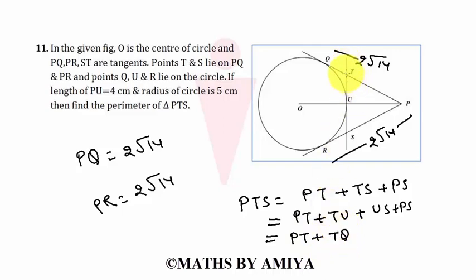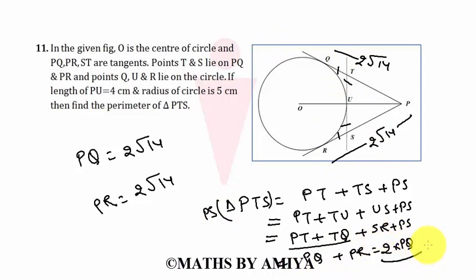Since TU and TQ are tangents and tangents are equal, so we can write TU is TQ plus US is SR plus PS, and PT plus TQ is PQ. And SR plus PS is PR. So the perimeter of triangle PTS is PQ plus PR and both are tangents is twice of PQ. So this is our last concept which is deduced from the first two concepts.